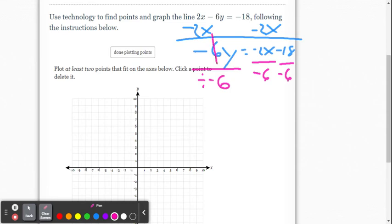So now we get 1y equals, now be careful here, negative 2 over negative 6. Negative over negative is going to be positive. And the 2 over 6 is going to reduce to 1 third. So it's going to be positive 1 third x. And again, negative 18 divided by negative 6. Negative over negative is a positive. And it's going to be 3.